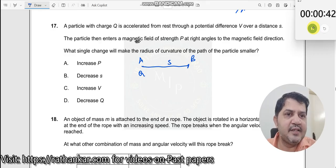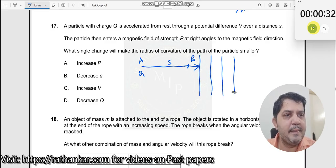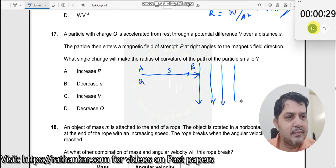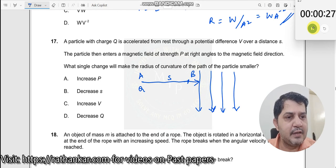The particle then enters a magnetic field of strength P at right angles to the magnetic field direction. Now, it enters like this, right angles. Maybe I can keep it like this. This could be my magnetic field.